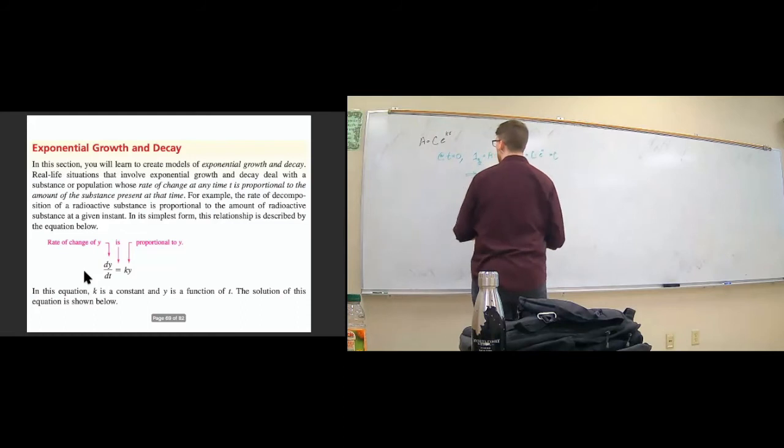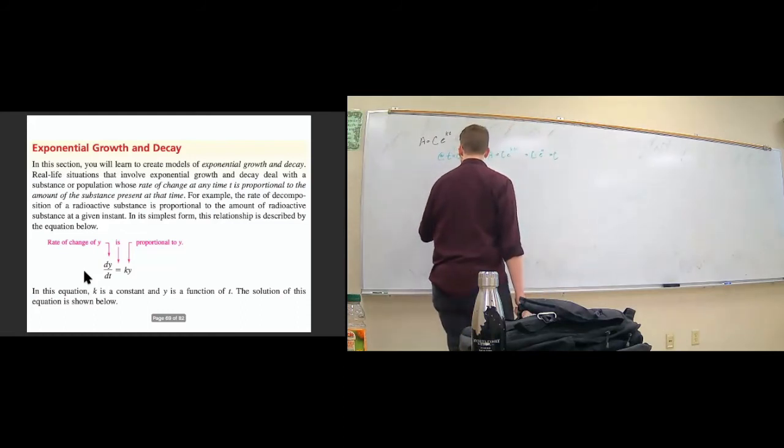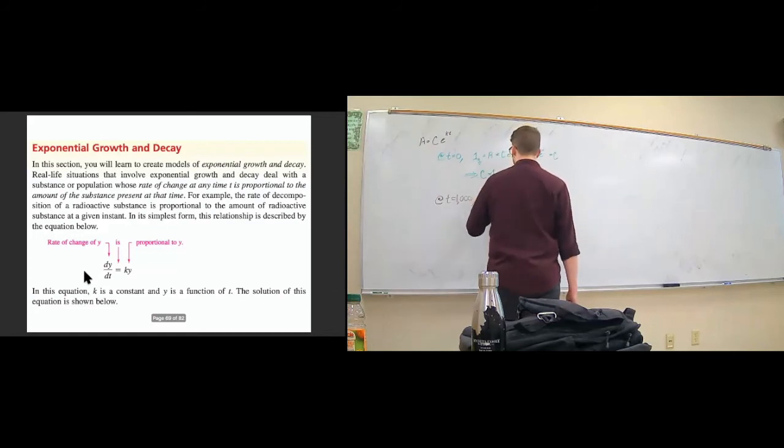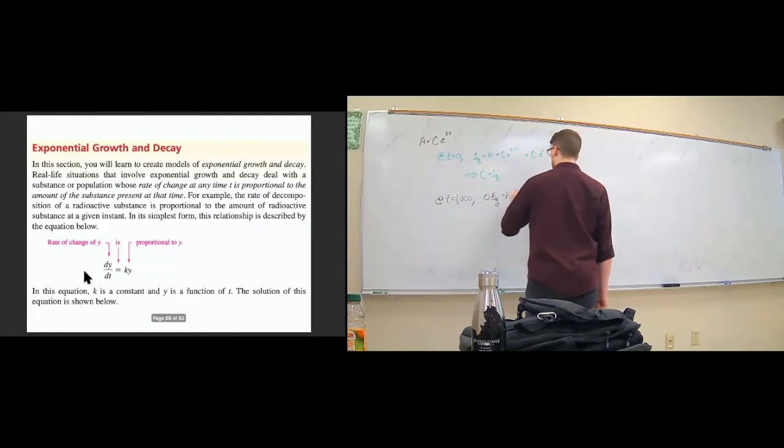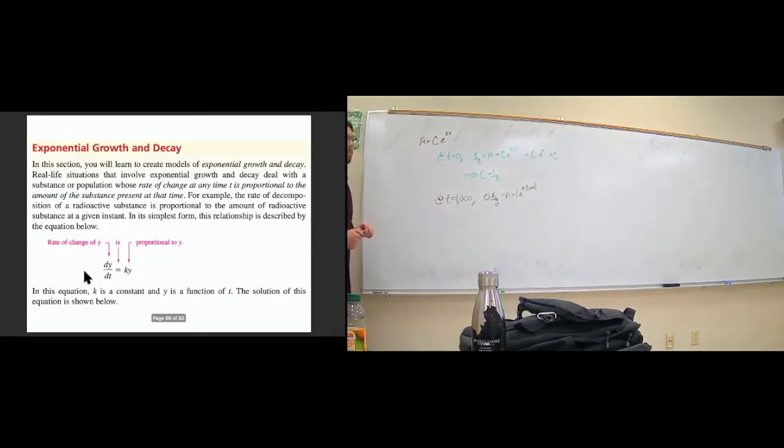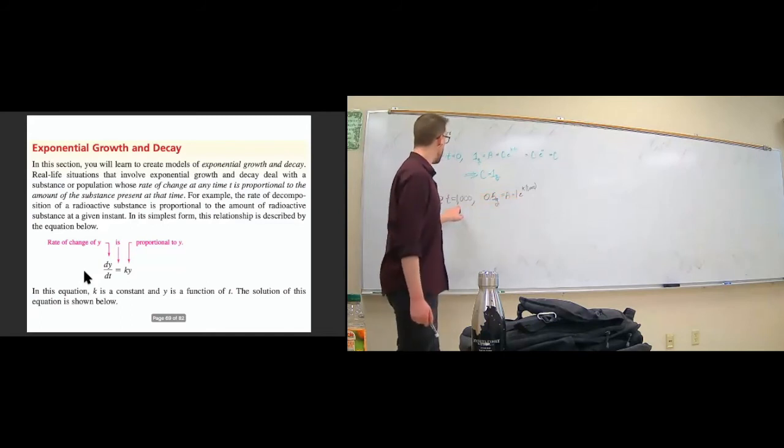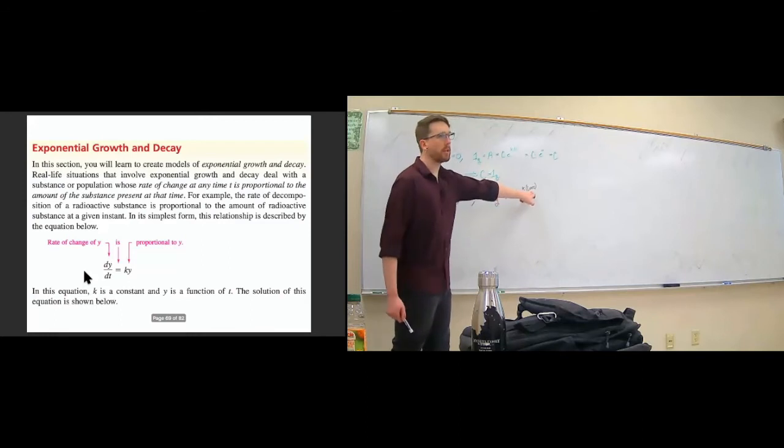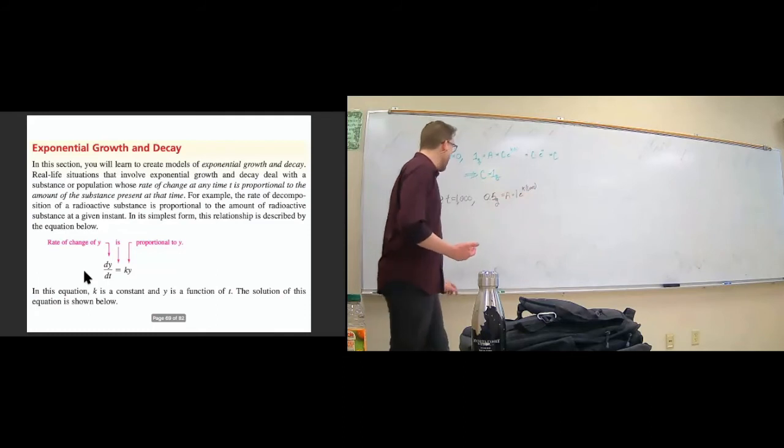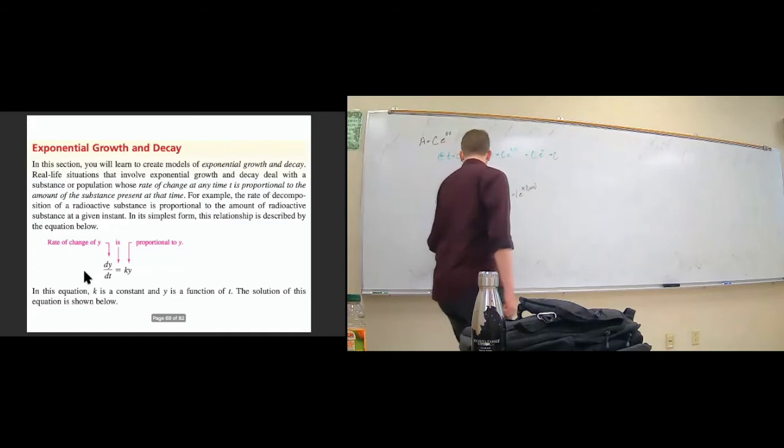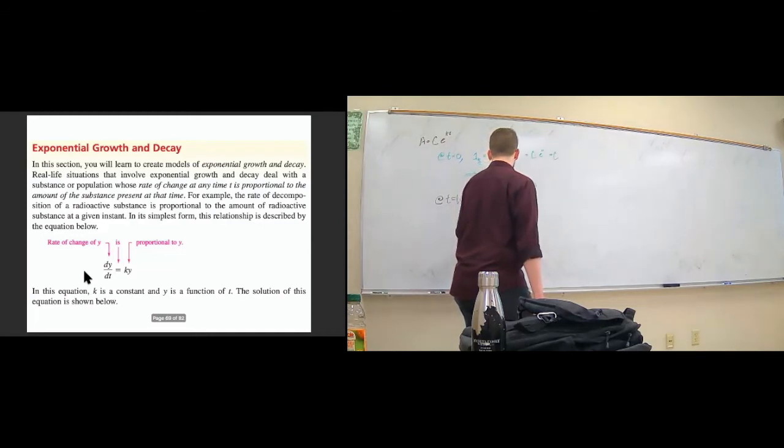Now, next thing we're told is that at time equal to 1000, we have 0.5 grams. All I've done here is I said, we know what C is. Let's go ahead and plug in that one. And we're told that we're looking at time equal to 1000. So let's go ahead and plug that in. Now to go ahead and solve for this, we know that 0.5 is equal to E raised to the k times 1000.